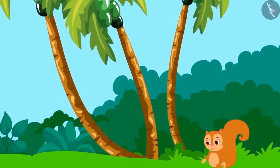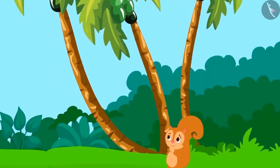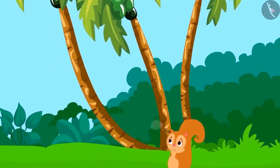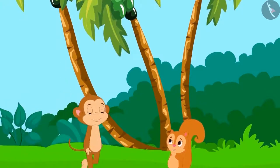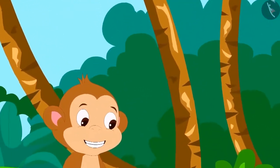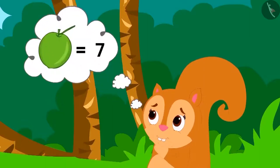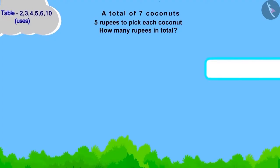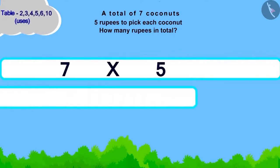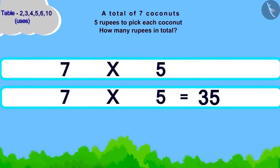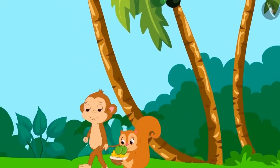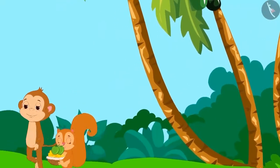Now Chanda had to pick coconuts from a very high tree, so she called Babban for help. Babban said he would take five rupees for picking each coconut, and Chanda needed seven coconuts picked. Using the table of five: seven multiplied by five equals thirty-five rupees. Chanda will have to give thirty-five rupees to Babban.